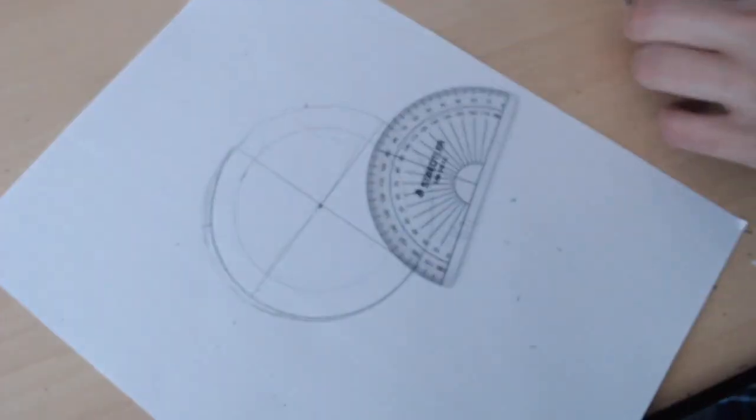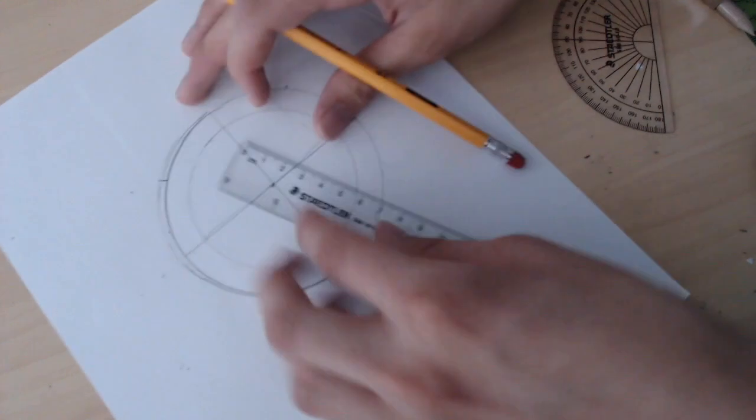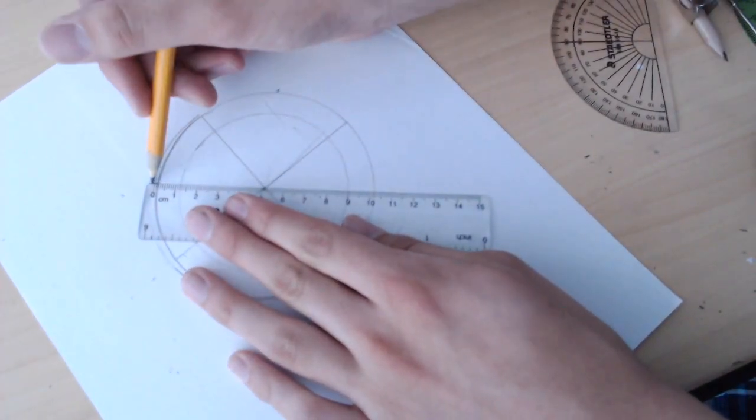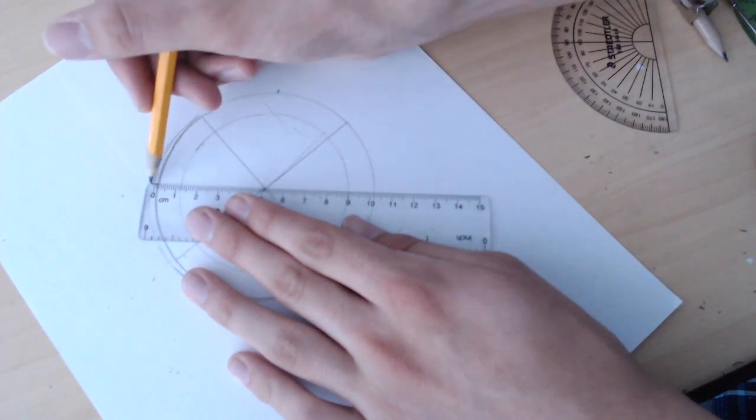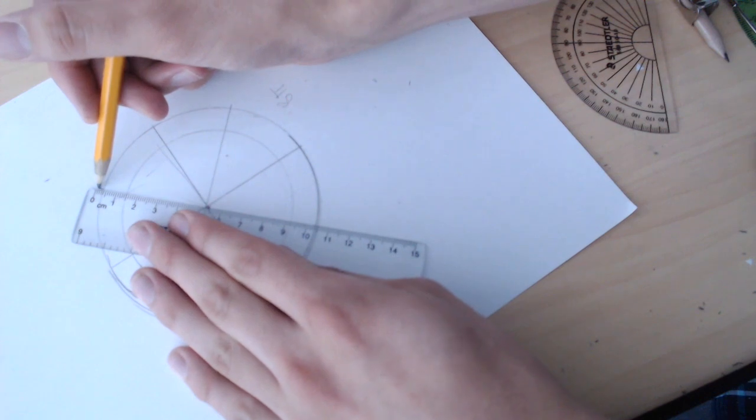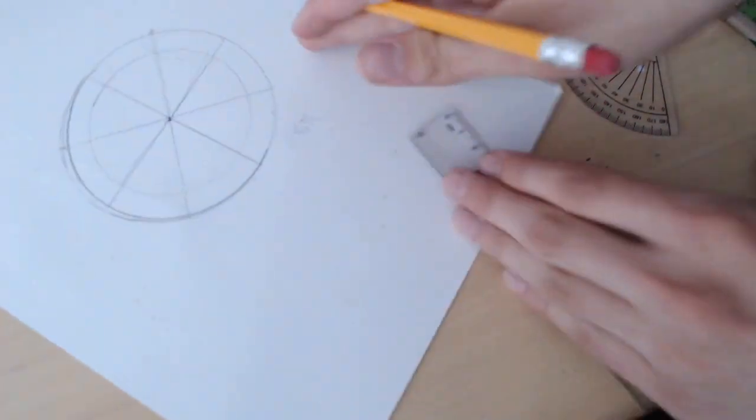And then we can get our ruler and then mark it out completely, making sure to go through the center point.